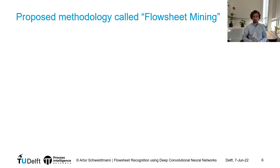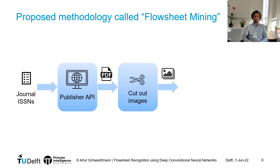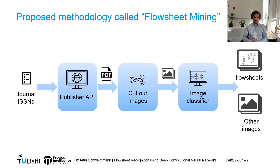So how do we start our flowsheet mining? We start with a selection of journals — so ISSN numbers essentially — of journals that are within the chemical engineering domain. Then we need some kind of publisher API, an application interface from Elsevier, from Wiley, and so on, which gives us a list of DOIs as well as a folder of PDF documents including all the publications in a specific journal. In the next step we cut out all the images in these PDF documents, giving us a huge pile of images. Then we need a classifier that is able to tell us, for a given image, if it's a flowsheet or something else.